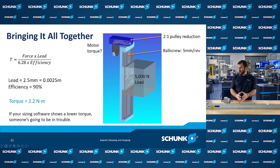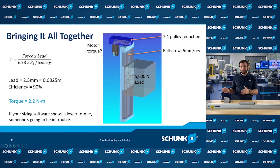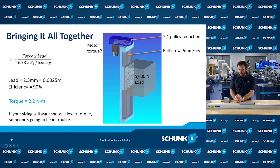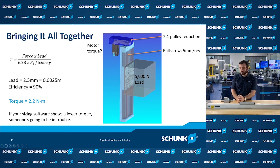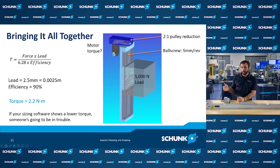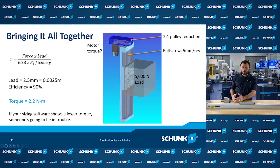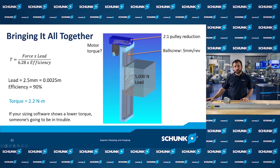We have our force — that's the 5,000 newton load. We have our lead — that's 2.5 millimeters, normalized to 0.0025 meters because we want torque in newton meters. We plug all the numbers in and calculate everything out. We took this really complicated mechanical system and calculated the motor torque required to lift the load: it's 2.2 newton meters. This is really important. If you use motor sizing software and get 3 newton meters, that's great. But if you plug something in wrong and get 1.5 newton meters, you're not going to be able to lift the load — it could be a very expensive problem, and worst case the load falls and something breaks. So it's really important to do a sanity check.